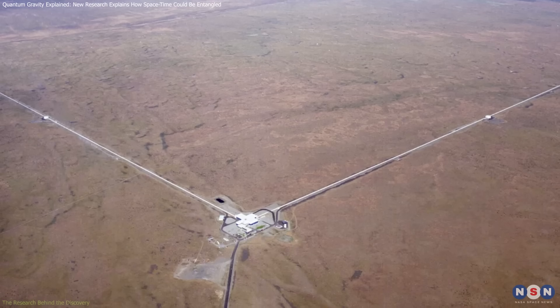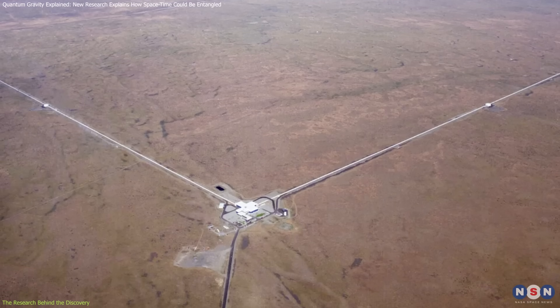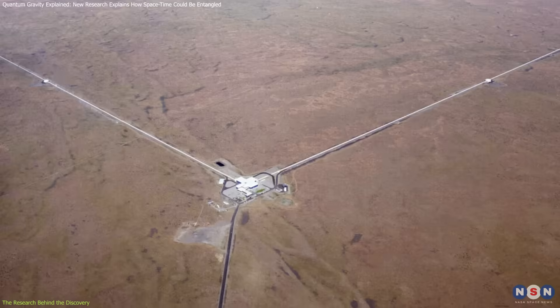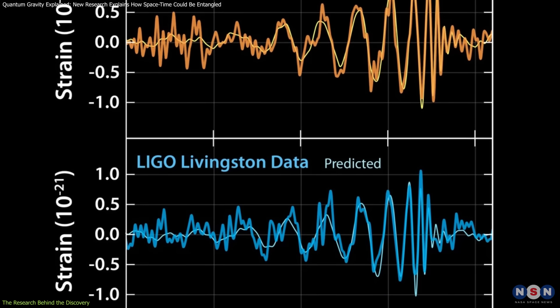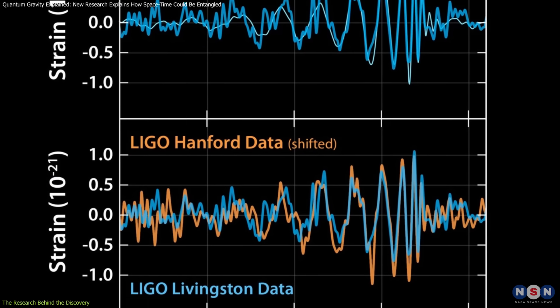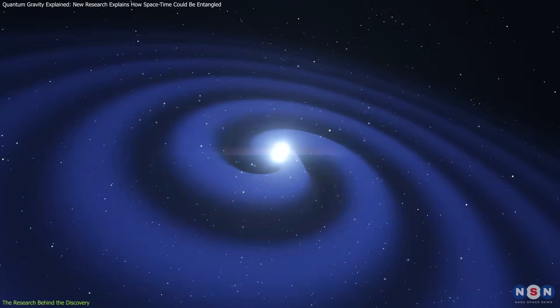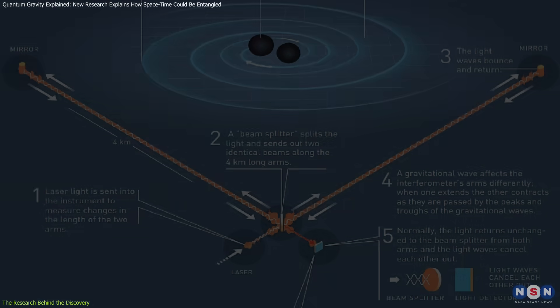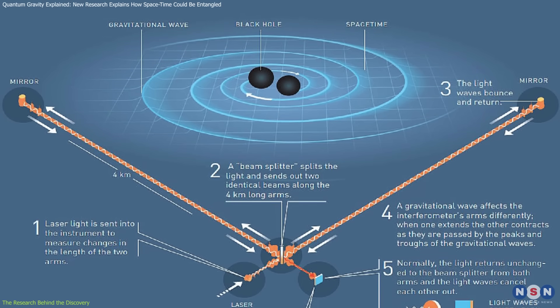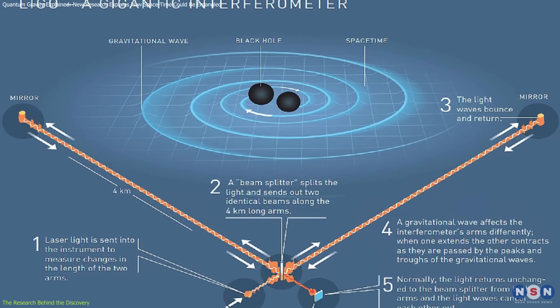Current gravitational wave detectors, such as the Laser Interferometer Gravitational Wave Observatory (LIGO), primarily observe classical gravitational waves, measuring minute distortions in spacetime caused by massive astrophysical events. However, they are not yet sensitive enough to detect the subtle quantum effects that might be present in these waves.